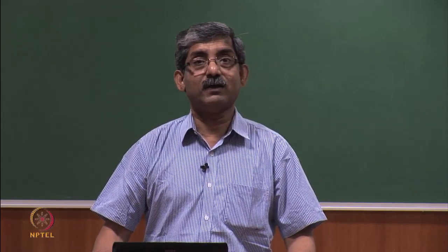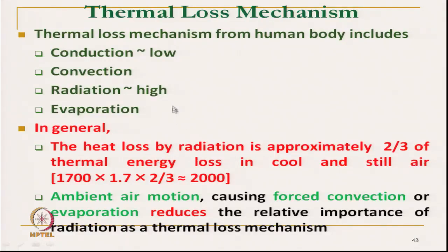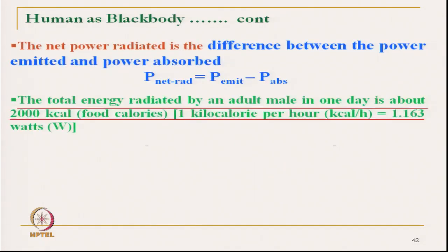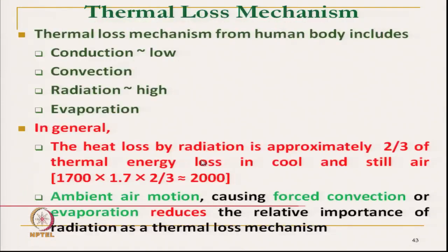The heat loss by radiation is approximately two-thirds of the total heat loss by all mechanisms combined — conduction, convection, radiation, and evaporation. So if we take 1700 kilocalories (heat generated while sleeping) multiplied by 1.7 (activity factor) multiplied by two-thirds, we get approximately 2000 kilocalories. This confirms the earlier value — radiative heat of approximately 2000 kilocalories per day for a typically active person.